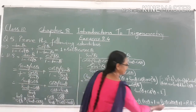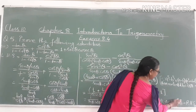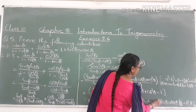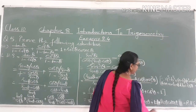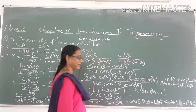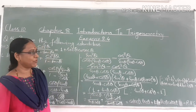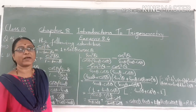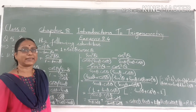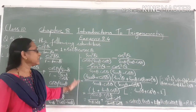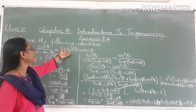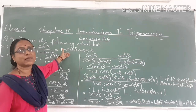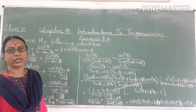That is equal to 1 plus sec θ into cosec θ. This is our right hand side. Therefore we have proved the identity, and this equals the right hand side. The identity is proved.